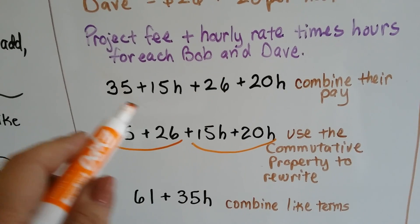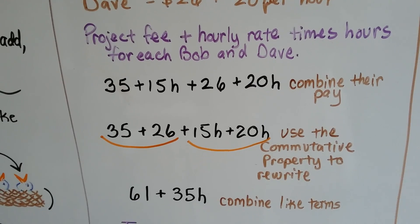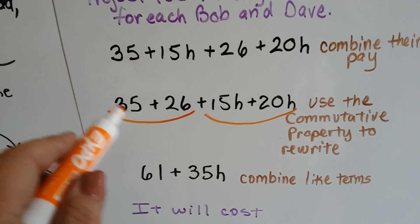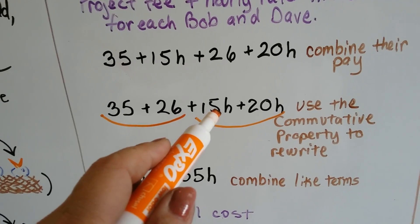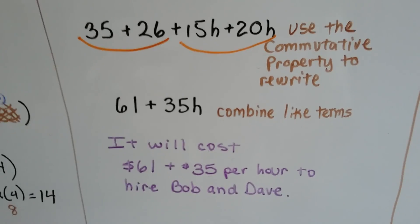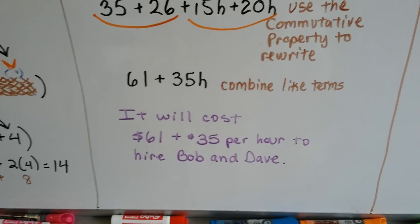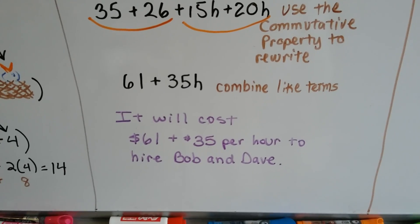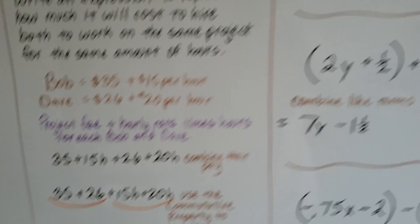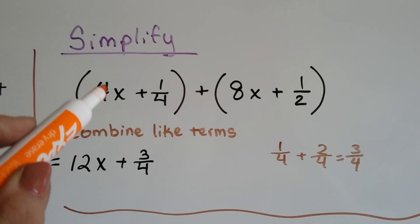Now we use the commutative property to group like terms together. We move the 26 over by the 35, and the 15h over by the 20h. Combining like terms: 35 and 26 give us 61, and 15h and 20h give us 35h. That's as far as we go — as simplified as we can get. It'll cost 61 dollars plus 35 dollars per hour to hire both Bob and Dave together.